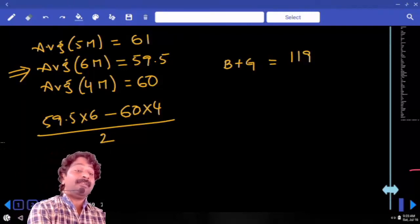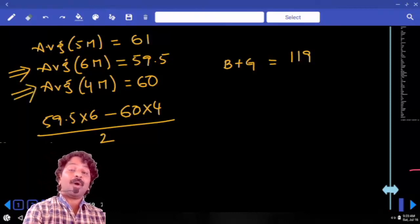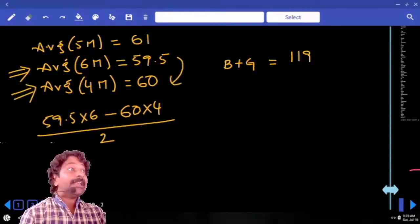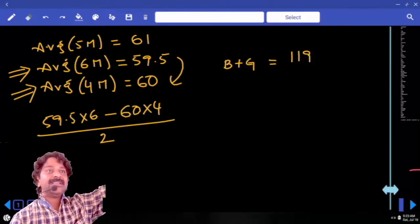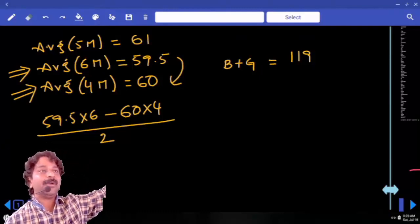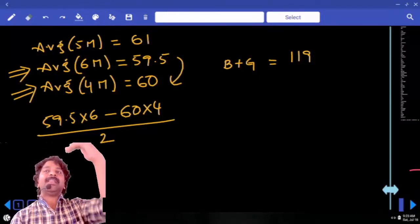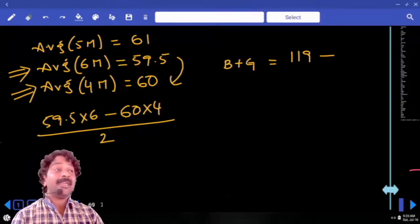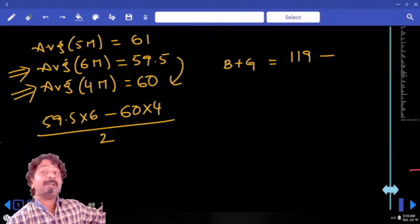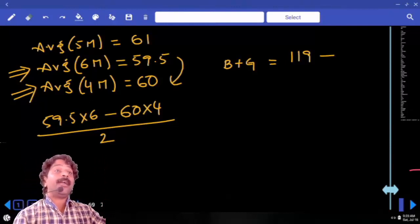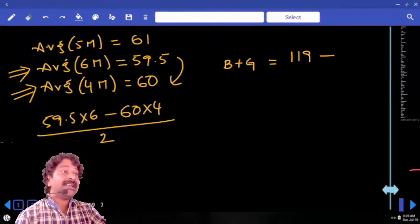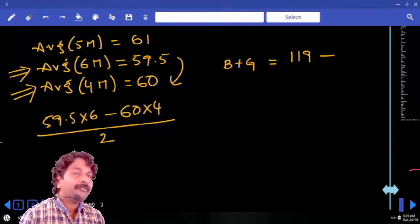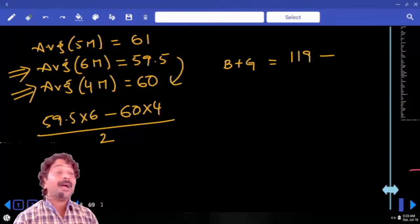But after we exclude these 2 people, what happened to average? It increased. That means sum of weights of bride and groom is less than 119. Average increased by how much? 0.5. Average increased by half for how many people? 4 people.